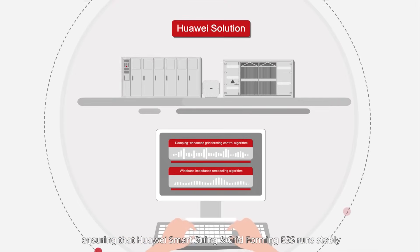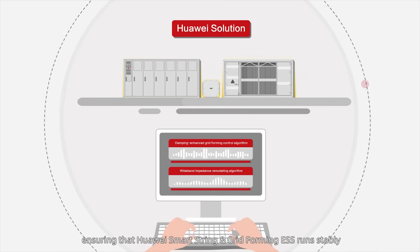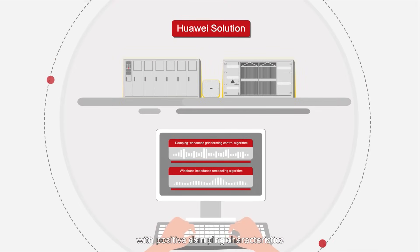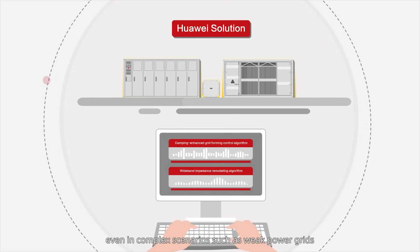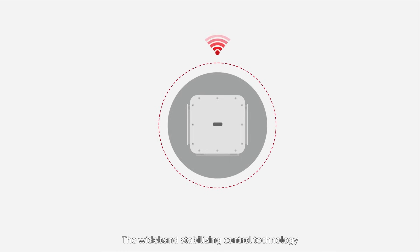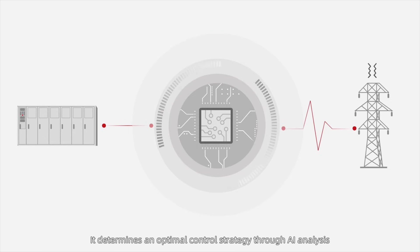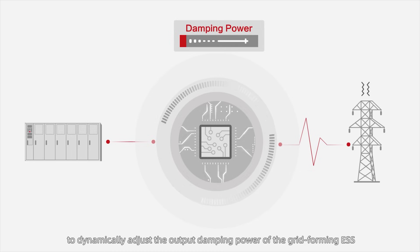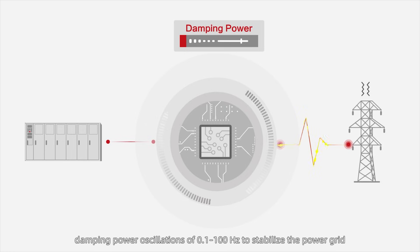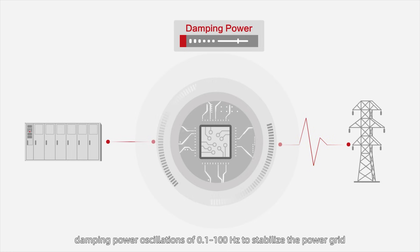This ensures that Huawei SmartString and Gridforming ESS run stably with positive damping characteristics, even in complex scenarios such as weak power grids. The wideband stabilizing control technology proactively detects power grid oscillation signals, determines an optimal control strategy through AI analysis to dynamically adjust the output damping power of the grid-forming ESS, damping power oscillations of 0.1 to 100 Hz to stabilize the power grid.